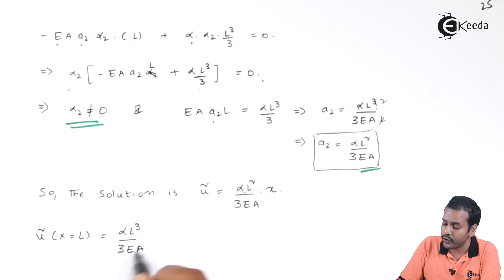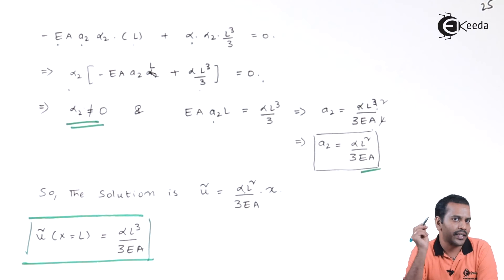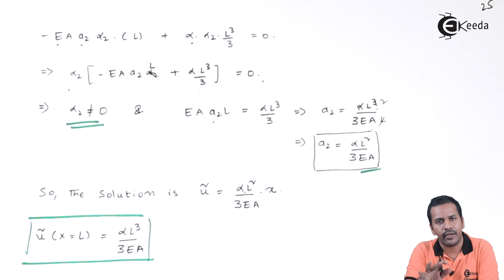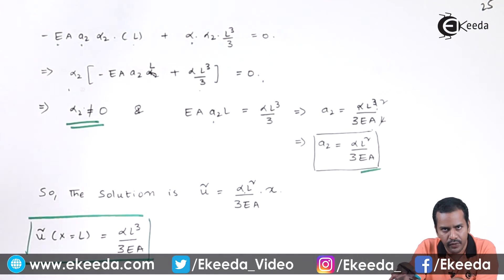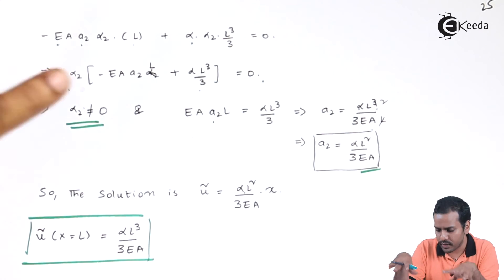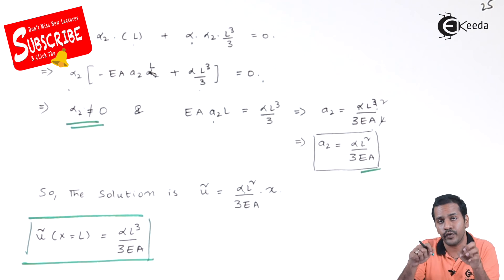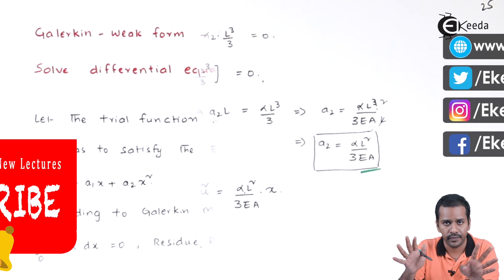This is our final solution, which is the same as the exact solution. We can solve the same problem using the Galerkin strong form or the Galerkin weak form — both are completely equivalent. The advantage of the weak form is that you don't need higher-order trial functions; lower-order functions suffice, making computations much easier. That is why the weak form is more widely used. Thank you for watching. Stay tuned and subscribe to Ekeda.